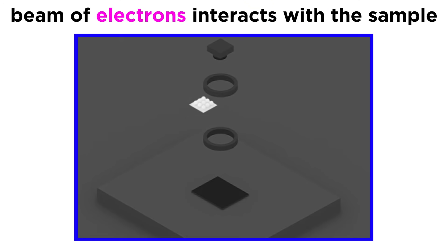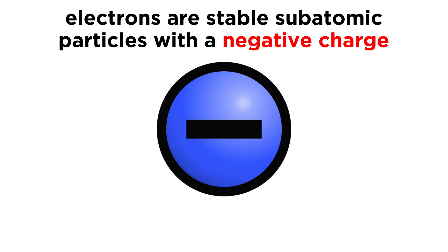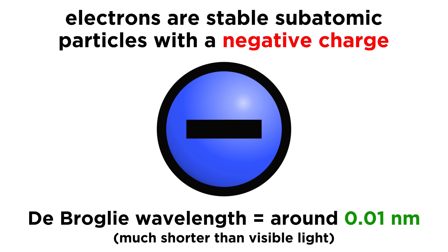How do they do this? Well, the answer is in the name — they use beams of electrons, which interact with the sample as the beam is transmitted through the specimen. As we recall from chemistry, electrons are stable subatomic particles that carry a negative charge. Electron beams have a much shorter wavelength than the visible light that light microscopes use, which we refer to as the de Broglie wavelength, as we learned in the Modern Physics series.